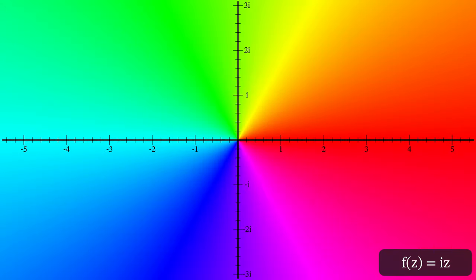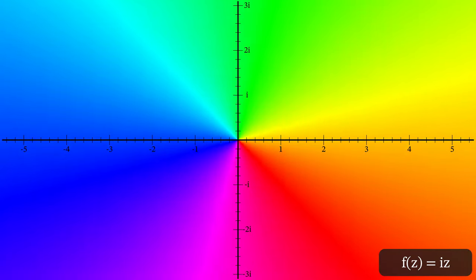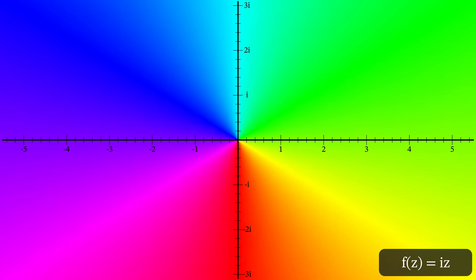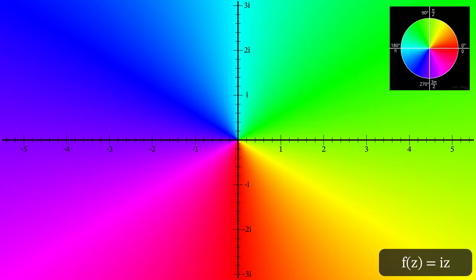Let's change our function to i times z. As expected it causes a rotation. However that rotation is not in the same direction as we saw our image rotate earlier. That's because with phase portraits the location is the input, the color is the output.